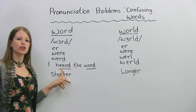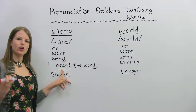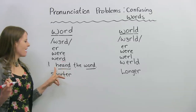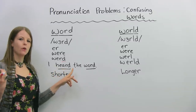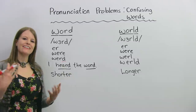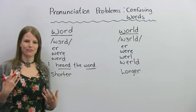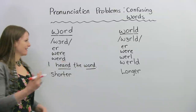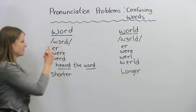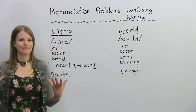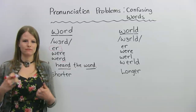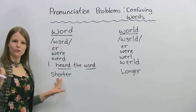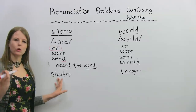Now if we add a D: word. Can you say that? Word. This is the past tense of hear: I heard. Can you say the word 'heard'? Heard. I heard the word. So you see these have the same sound — word, heard. The very basic part of this is if you can make the ER sound. Word. This is also a kind of short sound. Word.